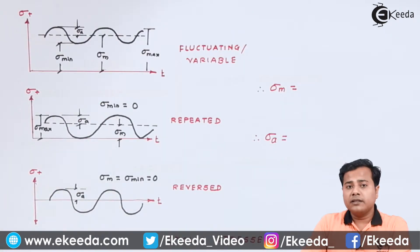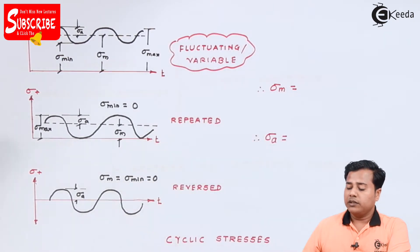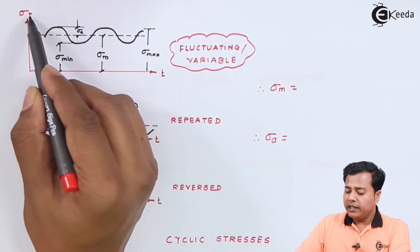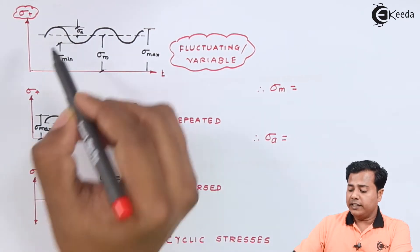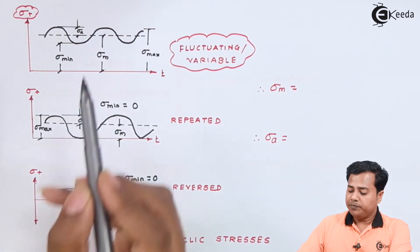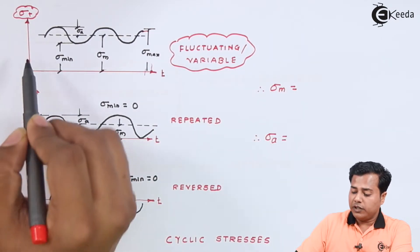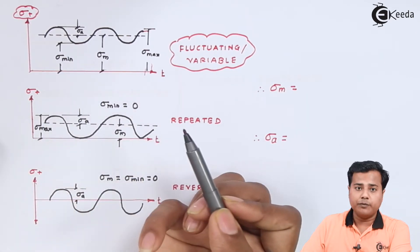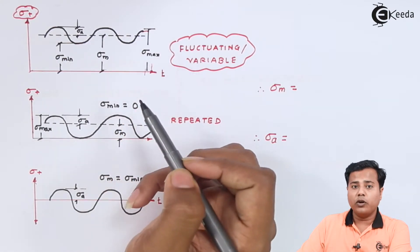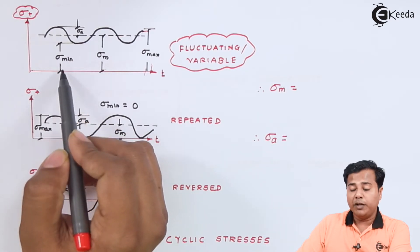For fluctuating or variable loads, stresses are plotted against time, and a sinusoidal wave is obtained. On the vertical axis we plot stress values; on the horizontal axis we plot time. At the peak point, the stress is the maximum stress, while the corresponding trough value is the minimum stress.